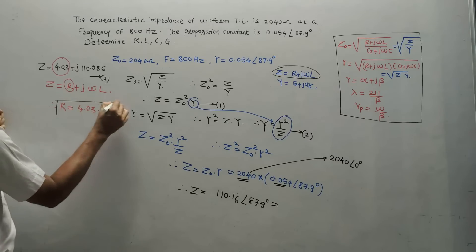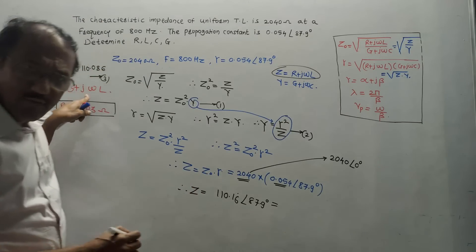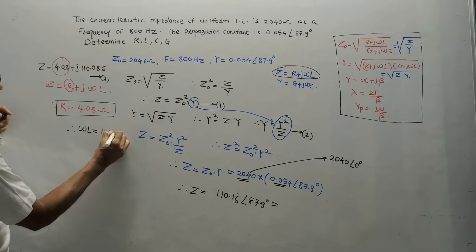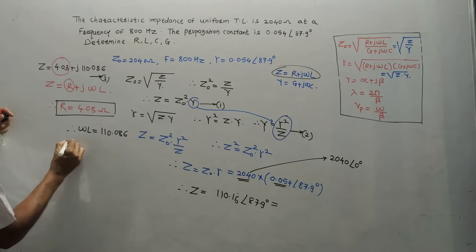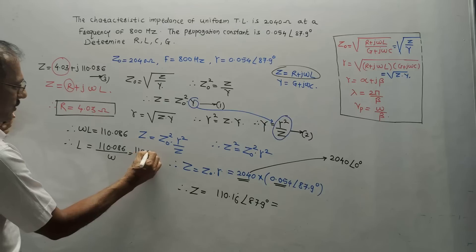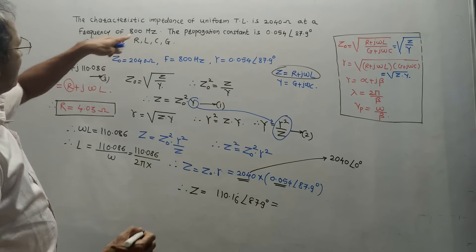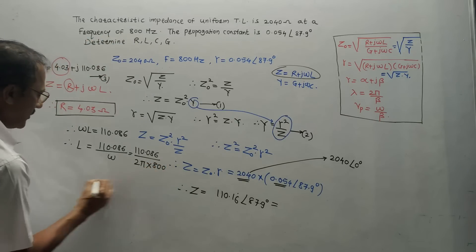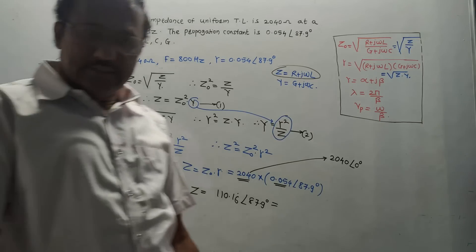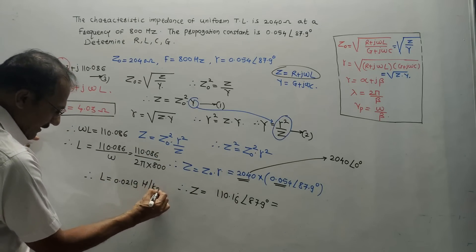For L: comparing imaginary parts, jωL = j·110.086, so ωL = 110.086. Therefore L = 110.086 / ω = 110.086 / (2π × 800). Solving this gives L = 0.0219 Henrys per kilometer.